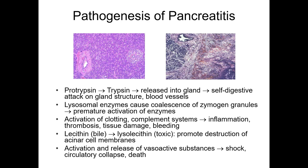In the pathogenesis of pancreatitis, trypsinogen is converted to trypsin and released into the gland, causing self-digestion of the gland structure. Lysosomal enzymes cause coalescence of zymogen granules and premature enzyme activation. Activation of clotting and complement systems leads to inflammation, thrombosis, tissue damage, and bleeding. Lecithin and lysolecithin are toxic and promote destruction of acinar cell membranes. Activation of vasoactive substances then causes shock, circulatory collapse, and death.